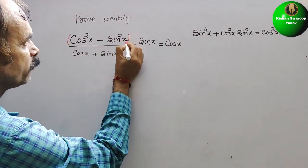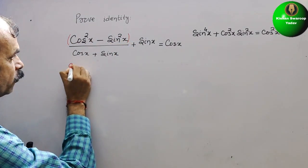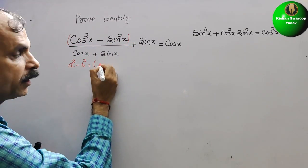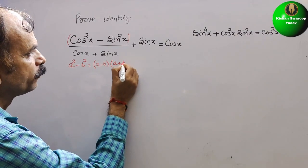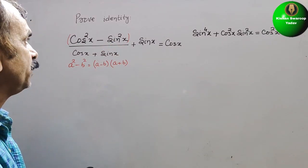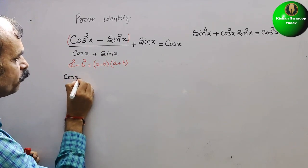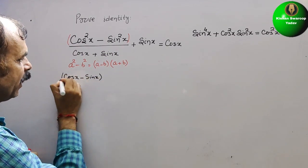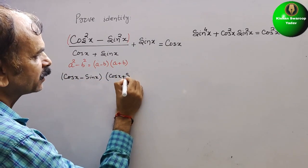The numerator is in the form of a squared minus b squared, which equals (a minus b)(a plus b). So we write the numerator as (cos x minus sin x)(cos x plus sin x) in the brackets.